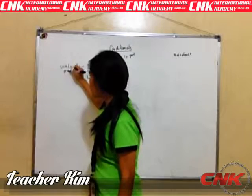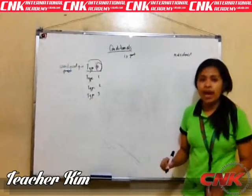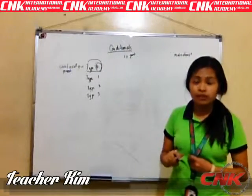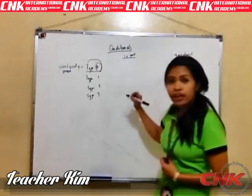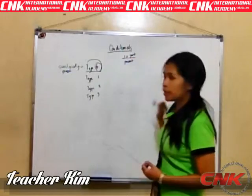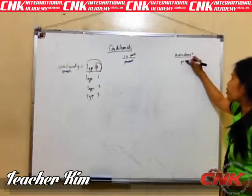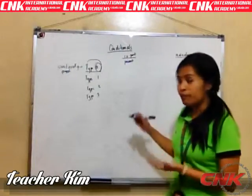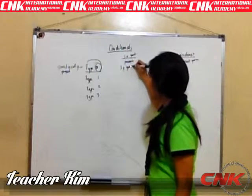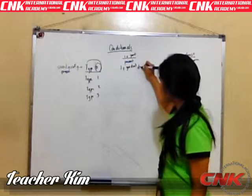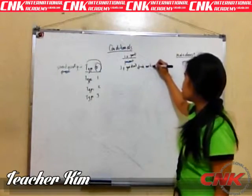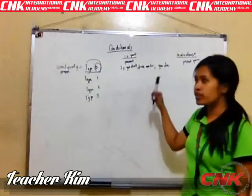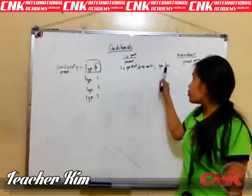Scientifically proven. I'll give you an example. So what is going to happen if you don't drink water? You're going to die. So for the if-part in Type 0, we're going to use the present form of the verb. And also in the main clause, we're going to use the present form. As in my example: if you don't drink water, you die. It is a scientifically proven fact.